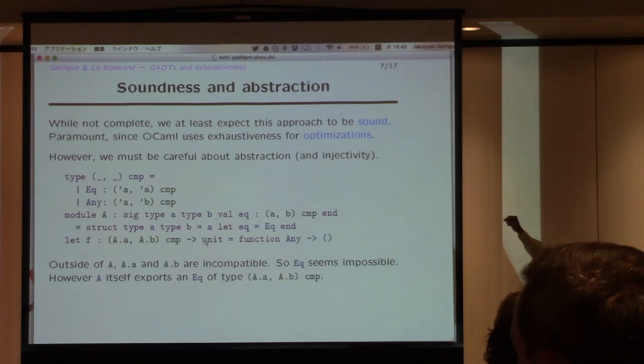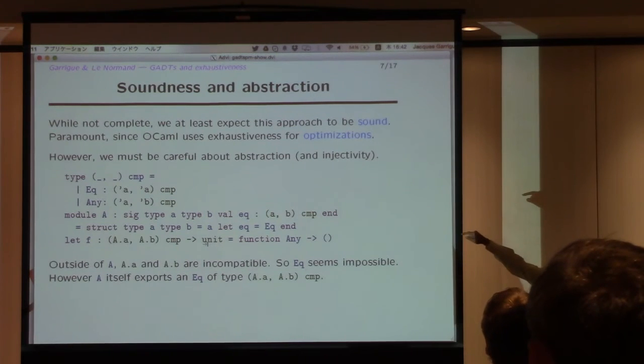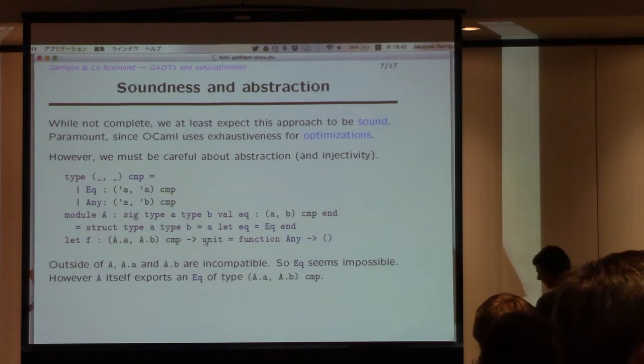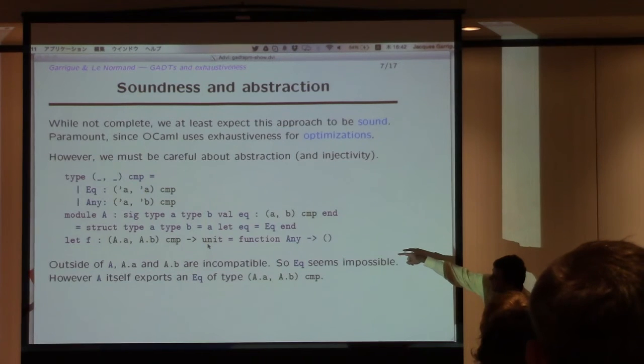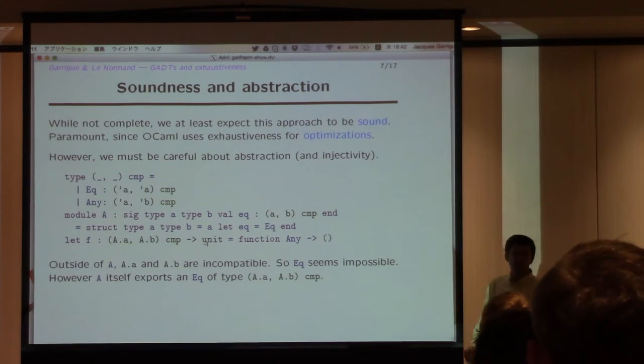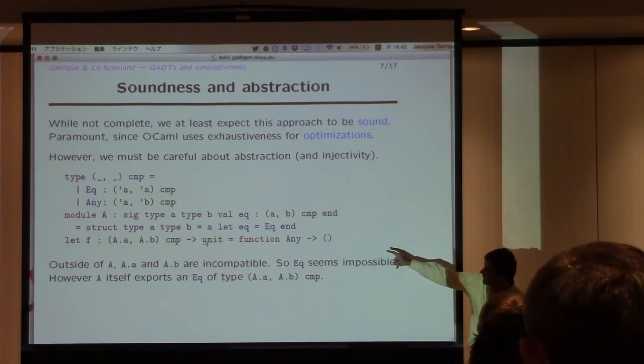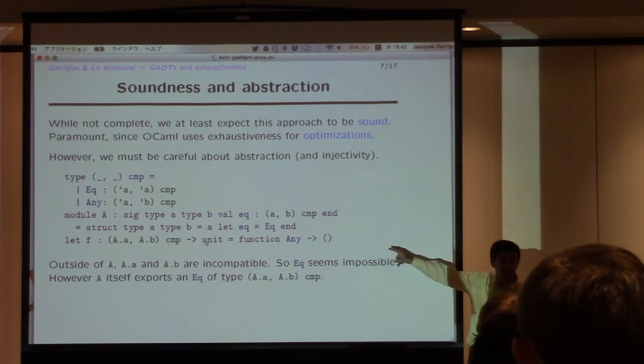So, consider here, I have this function, which is taking an A and B. And if you look at the interface of module A, A and B are two abstract types, distinct abstract types in the interface. So, clearly, for unification, they are not compatible. And so I say, since they are not unifiable, then the Eq case shouldn't ever occur. So, is this exhaustive?